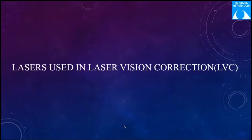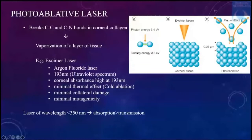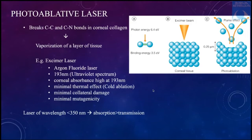The lasers used in laser vision correction include the photoablative laser. The excimer laser is an excited dimer in which electrical energy creates a dimer between argon and fluorine, which is highly unstable, breaks down, and releases photon energy of approximately 6 electron volts — greater than the binding energy between carbon-carbon and carbon-nitrogen bonds in corneal collagen — leading to ablation and vaporization of tissue creating the plume effect. Argon fluoride is used because at wavelengths less than 350 nm, absorption predominates. Corneal absorption is high at 193 nm, with minimal thermal effect and minimal collateral damage — hence called cold ablation.